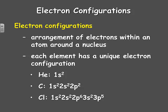Carbon has six electrons. Two go in the 1S sublevel, two in the 2S, and two left to go into the 2P sublevel. Chlorine has 17 electrons: two in the 1S, two in the 2S, six in the 2P, two in the 3S, and finally 5 to go into the last sublevel, the 3P sublevel.